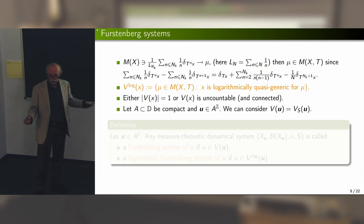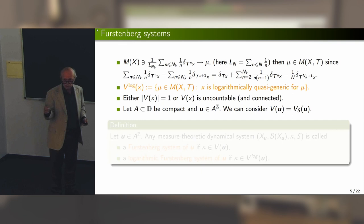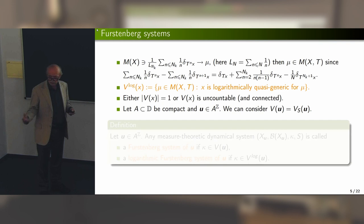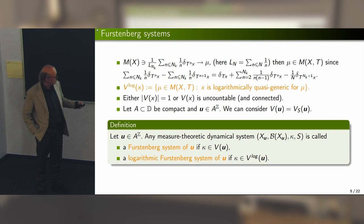Going back to our context: when we have an arithmetic function, we take this function, take the subshift it generates, treat the function as a point in our subshift space, and consider the corresponding empirical measures and their limits. Any measure-theoretic system obtained in this way is called a Furstenberg system of our arithmetic function. We have two kinds: Cesaro Furstenberg systems and logarithmic Furstenberg systems. Remember it's either one measure or uncountably many.